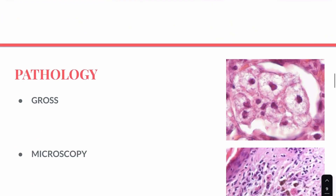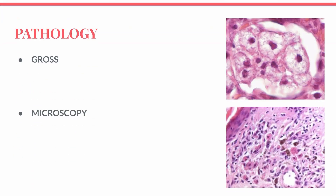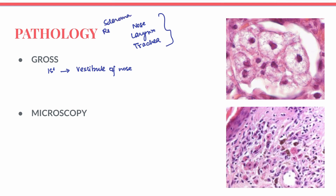Regarding pathology, we describe it in gross and microscopical features. The first affected part of the body is the vestibule of the nose, but other sites include the whole nose, larynx, and trachea. Because all of these involve the respiratory passage, this disease is also known as scleroma respiratorium.